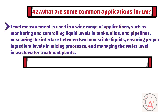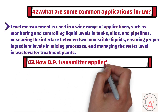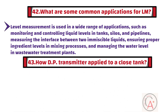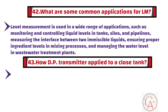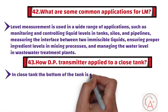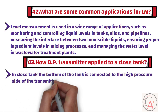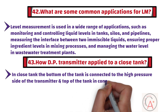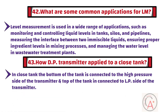Question 43: How is the DP transmitter applied to a closed tank? In a closed tank, the bottom of the tank is connected to the high-pressure side of the transmitter, and the top of the tank is connected to the LP side of the transmitter. In this way, the vessel pressure is balanced.